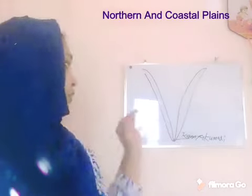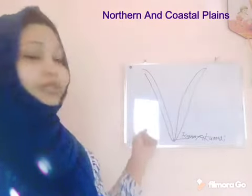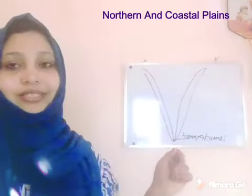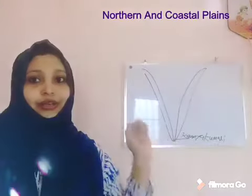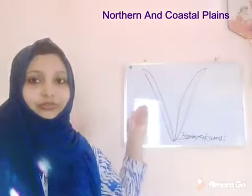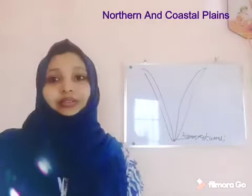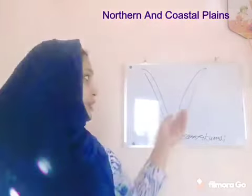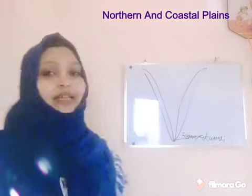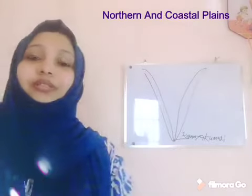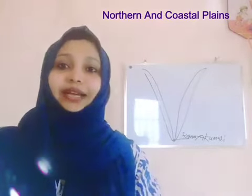So just remember all these things about the coastal plains: western coastal region and eastern coastal region, both meeting at Kanyakumari. The western coastal plain is divided into three — Gujarat coast, Konkan coast, and Malabar coast. The eastern coastal region is divided into two — Northern Sirkars and the Coromandel Coast. We will study more in the coming classes. Bye, take care.